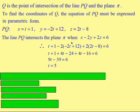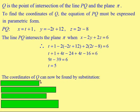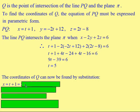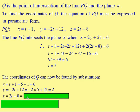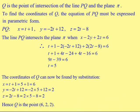The line PQ intersects plane pi when t = 5, and they intersect at point Q. We can find the coordinates of Q by replacing t with 5: x = 5 + 1 = 6, y = -2(5) + 12 = 2, and z = 2(5) - 8 = 2. So the point of intersection Q is (6, 2, 2).